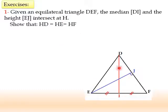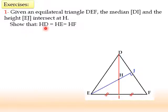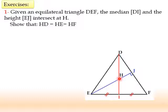This is DI and EJ. The point of intersection is called H. It's required to prove HD equals HE equals HF. As I told you, DI and EJ are perpendicular bisectors drawn inside the triangle. H is the intersection of the perpendicular bisectors, so H is the center of the circle circumscribed about triangle DEF. I can say that HD, HE, and HF are radii of the same circle, so they are equal.